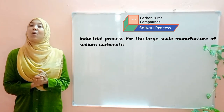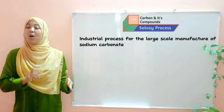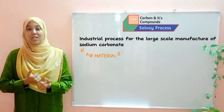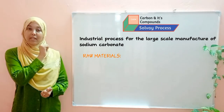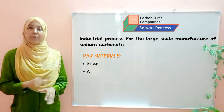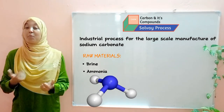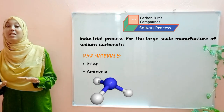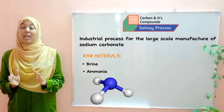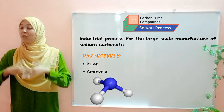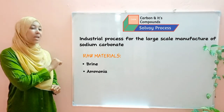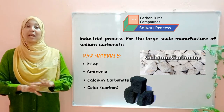As with any discussion of industrial processes, our starting point is the raw materials. There are four raw materials for the Solvay process. Number one: brine, which is simply a concentrated solution of sodium chloride. Next: ammonia, which is obtained from the Haber process — a process discussed in detail in Form 3 under nitrogen and its compounds. The last two are calcium carbonate and coke, where coke is simply carbon.